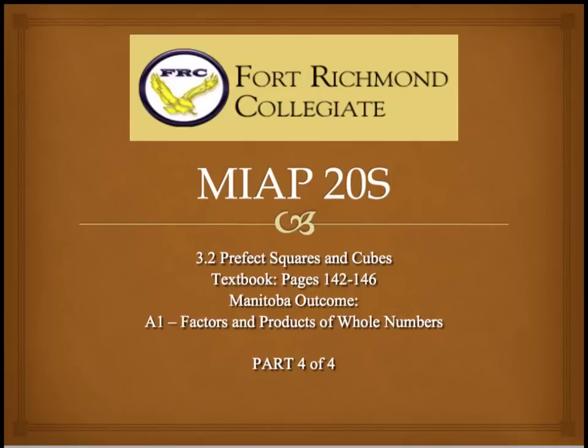Okay, here we go. We're on the last of the factors and products of whole numbers. That's outcome A1, and so it's part 404, and we're looking at a very small section from the textbook, section 3.2, just with a little side topic of perfect squares and cubes.